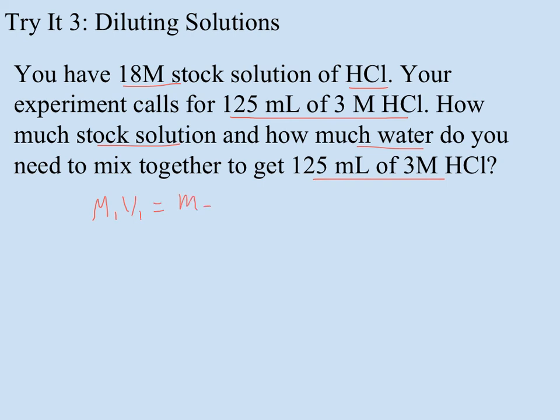Remember, we're using M1 times V1 equals M2 times V2. So my stock solution is 18 molar. I don't know how much of that I'm going to need. But my final solution should be 3 molar and 125 milliliters. Now technically, molarity is given in moles per liter, but you could just as easily change that to moles per milliliters. So there's no need for me to change this to liters. I can just leave it as milliliters as long as I know that means my other volume will also be expressed in milliliters. So solving for x, I'm going to take 3 times 125 divided by 18, and that means x is 20.8 milliliters. That's how much stock solution I use. Not very much.